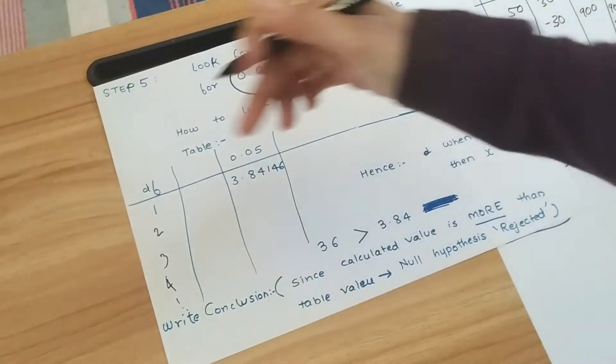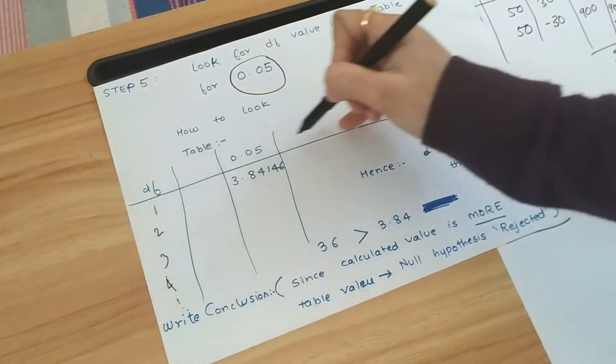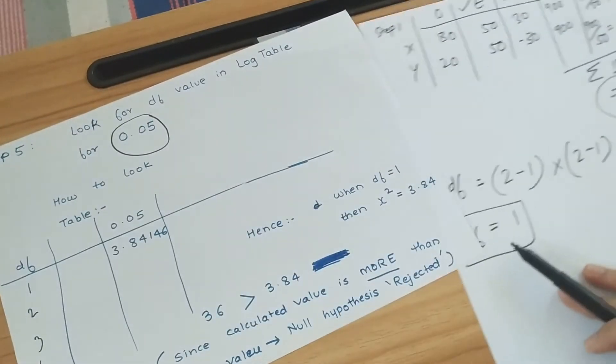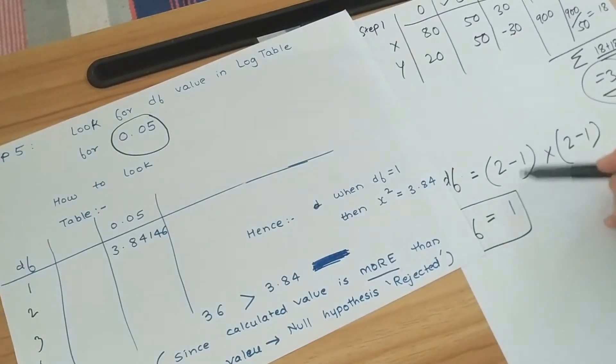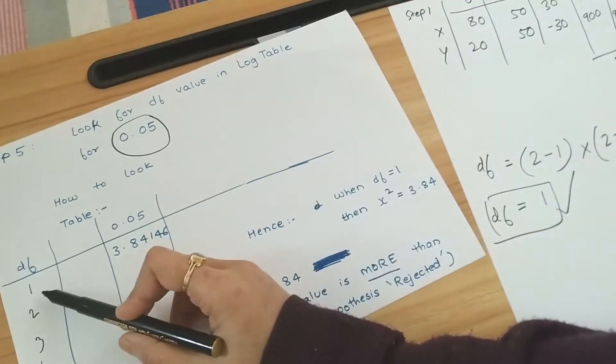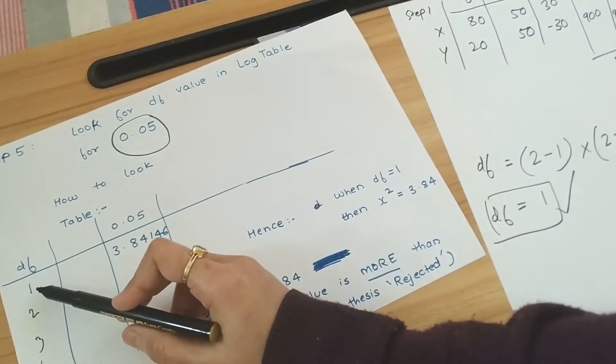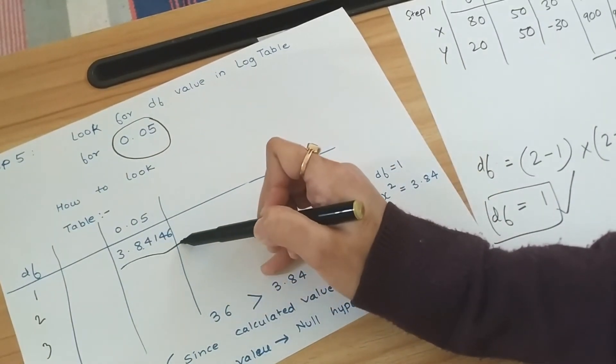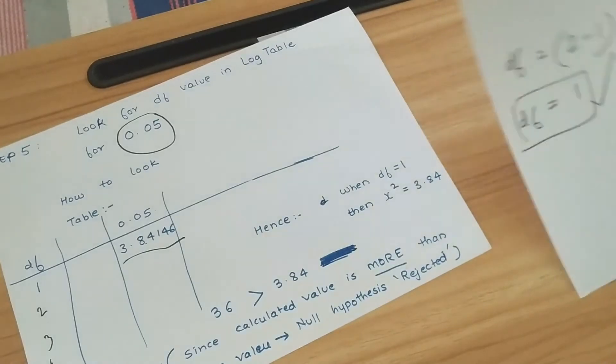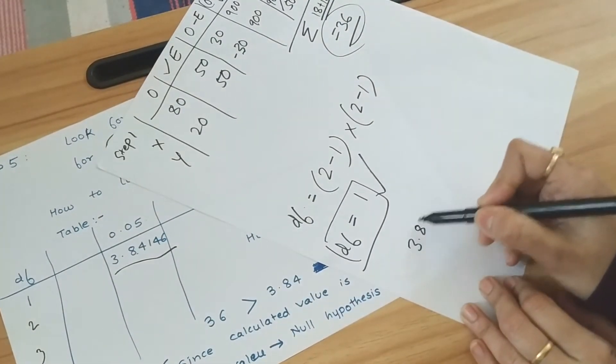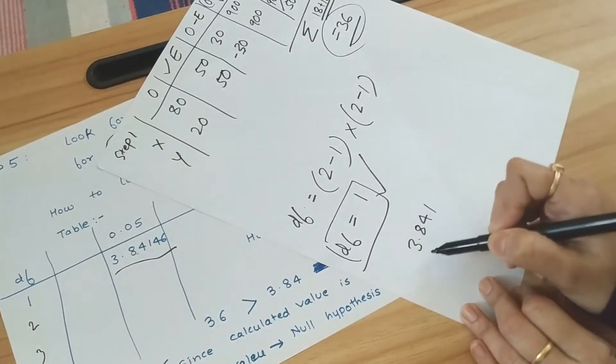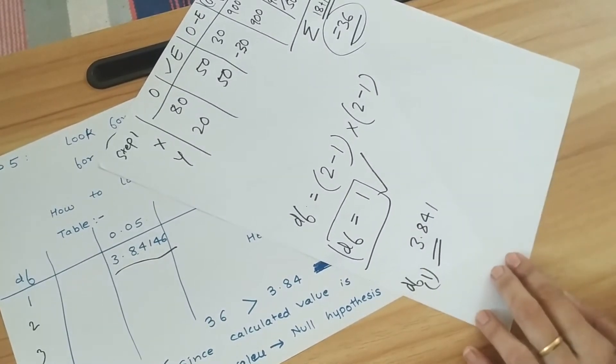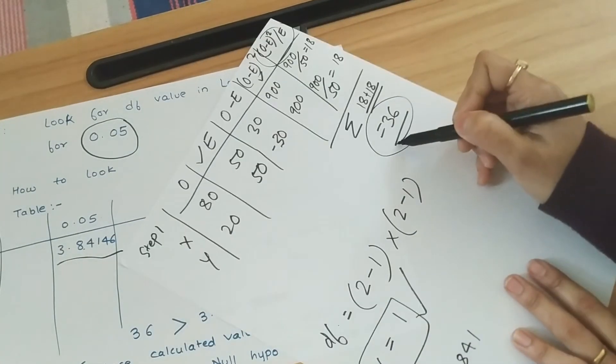So row-wise you will see 0.05, and column-wise we have to find the df as 1, which we have received over here. So 1 is this, and across you search for 0.05, you will get this value. So then we write down 3.841 is the value for df of 1.